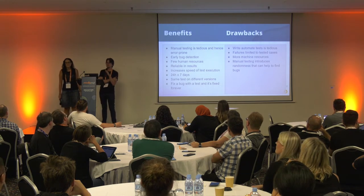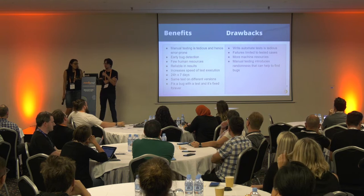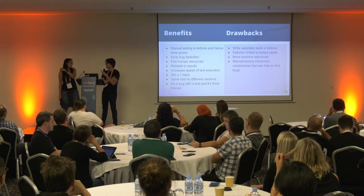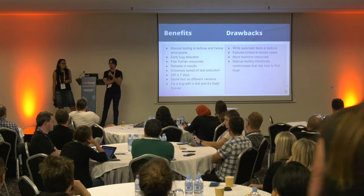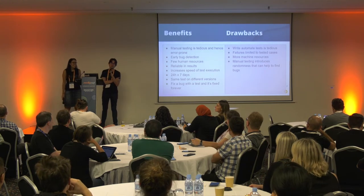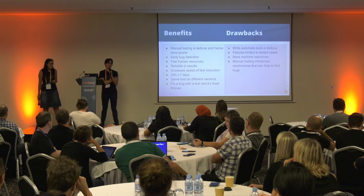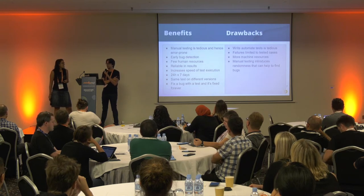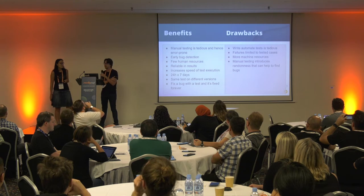We are going to present the benefits and drawbacks of automatic testing. Manual testing is very tedious, very hard, and consumes a lot of time. Writing automatic tests also consumes time, but when you write a test, it can be run forever. It's used to detect bugs earlier, mostly regressions, and tests are reliable and can run 24/7. Fix a bug with a test and it's fixed forever — because if a regression happens, the test will tell you.